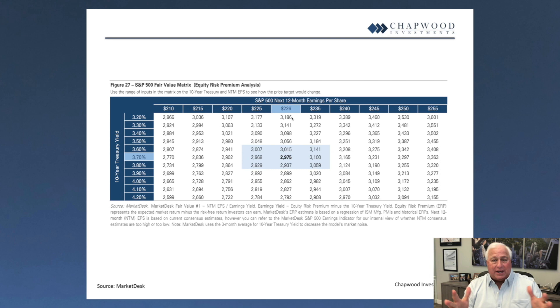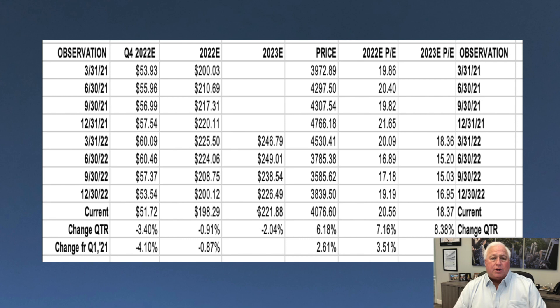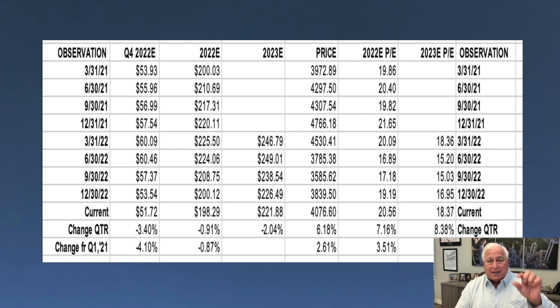There's one other caveat: the growth rate of earnings. You want the growth rate of your earnings to be close to or equal to the price-earnings multiple of what you are evaluating. This next chart shows that the earnings estimate for 2023 is $221, and the current price of the S&P is 4173. If you simply take the price divided by the earnings, that gives you the PE, and the PE should be close to or equal to the growth rate.